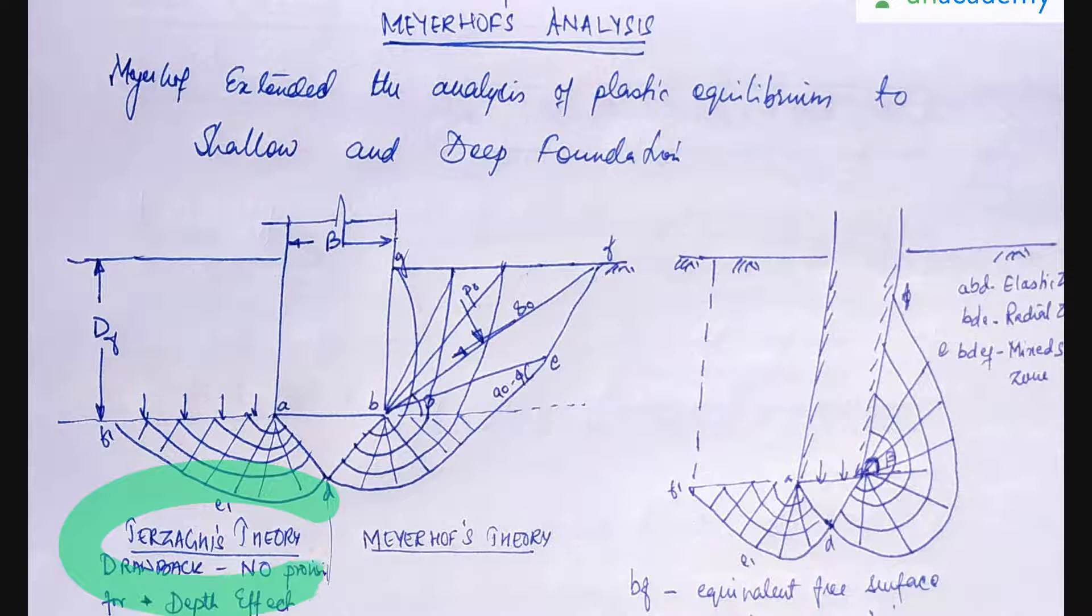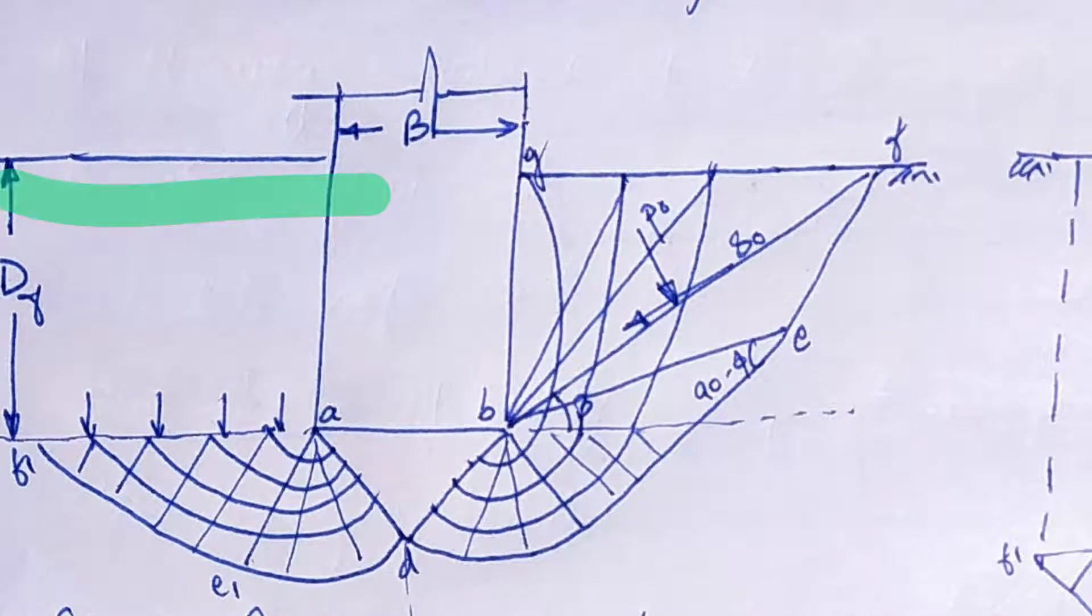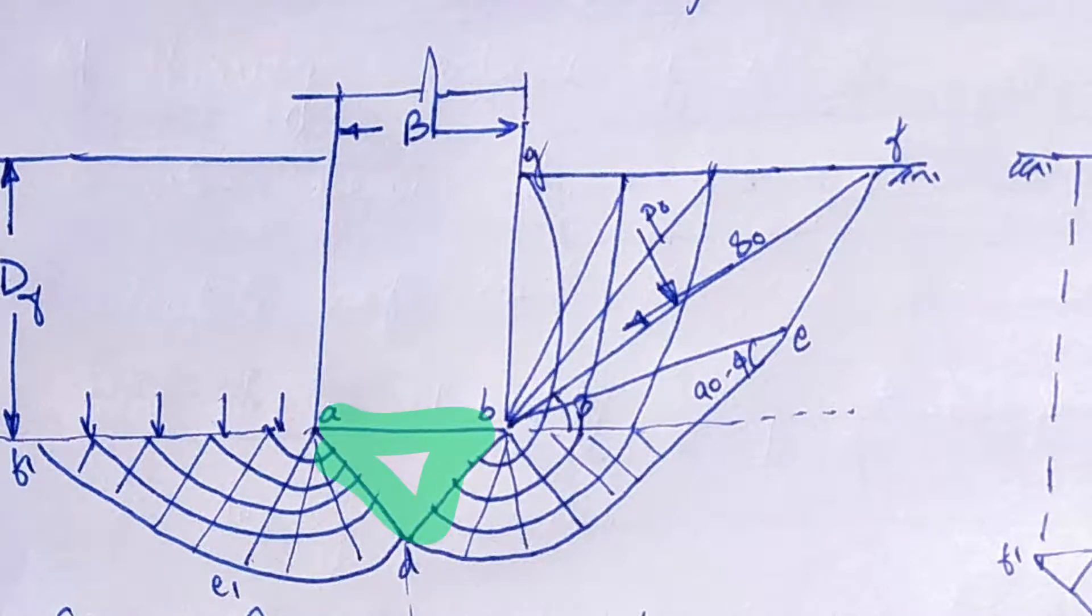We have already studied Terzaghi's theory in our previous lesson. In this lesson let's see Meyerhof's theory. He assumed this is your footing at ground level below which you can see the footing here, B is the width and DF is the depth of the footing. On application of vertical load, this is your failure wedge which is formed here, similar to Terzaghi. This is called the elastic zone.